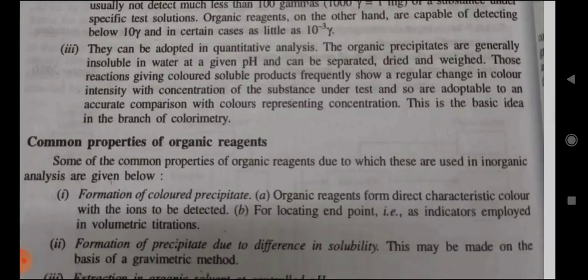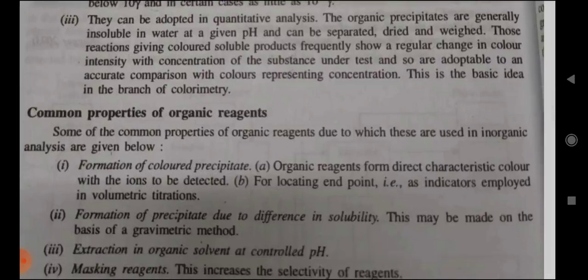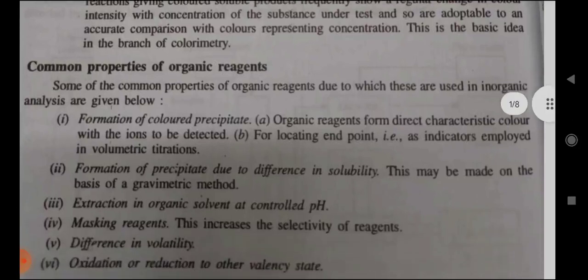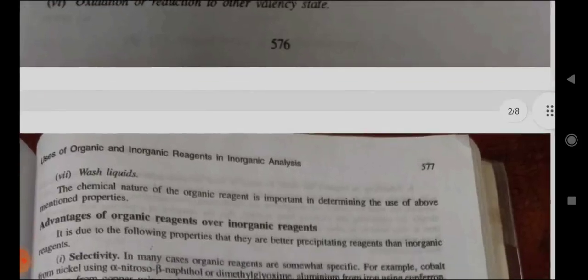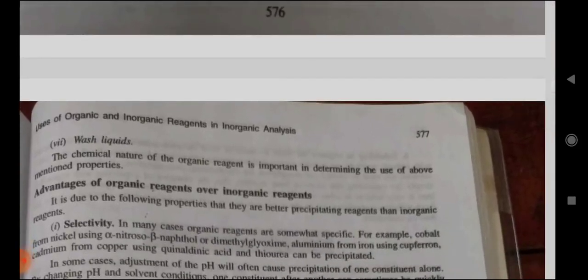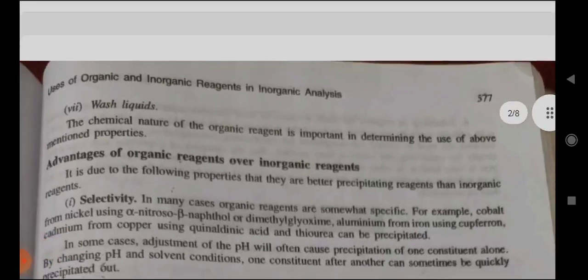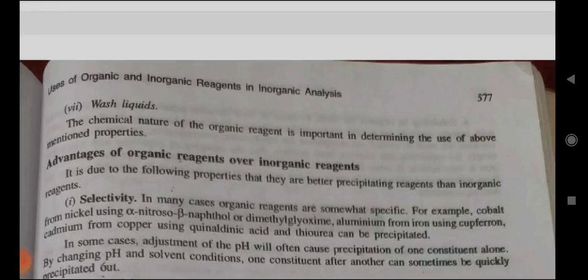Common properties of organic reagents: First, formation of colored precipitates — organic reagents form characteristic colors with the ion to be detected, useful for locating endpoints as indicators in volumetric analysis. Second, formation of precipitates due to difference in solubility, which may form the basis of a gravimetric method. Third, extracting organic solvents at controlled pH. Fourth, masking reagents, which increase the selectivity. Fifth, difference in volatility. Sixth, oxidation-reduction to other valency states. Seventh, wash liquid.